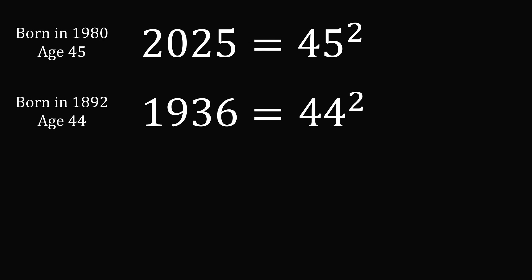Someone would have had to have been born in 1892, so their age would be 44 in 1936. That was the last time you could say the age squared would be equal to the year.